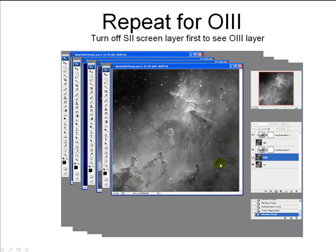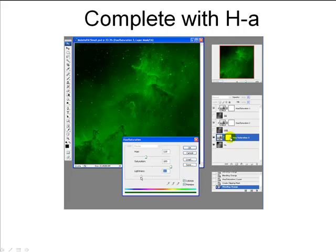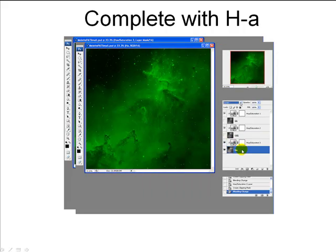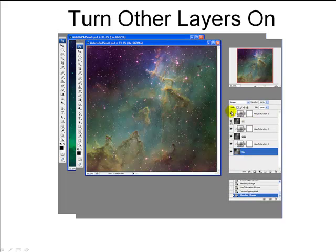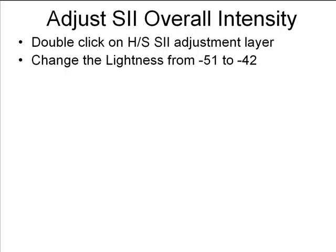Turn off the blue data, and what we're left with is the HA data at the bottom. Repeat the same process: create a hue saturation adjustment layer, click Colorize, map hydrogen alpha to green at about 120, saturation 100%. Since H-alpha is typically stronger than the other emission lines, take the lightness down to about minus 60 so its contribution is less bright than O3 and S2. Click OK, right-click to create the clipping layer mask, and change the HA to Screen blending mode. Now turn the other layers on — with HA green, O3 blue, and S2 red — and we see the more classical Hubble palette narrowband color image with blue in the background and beautiful brown-amber colors surrounding it.